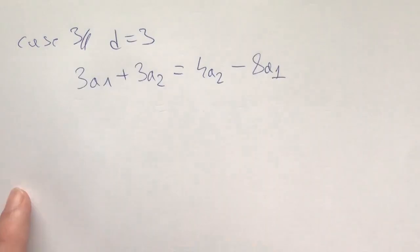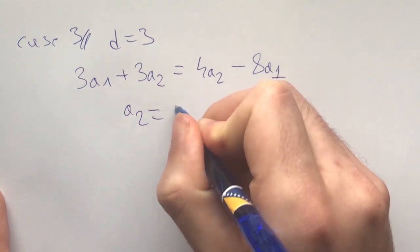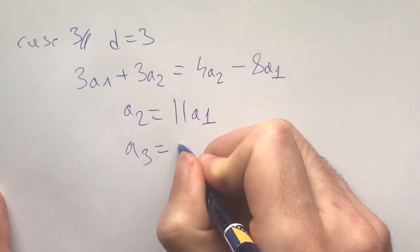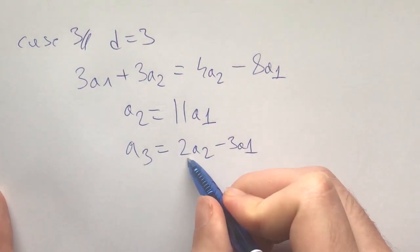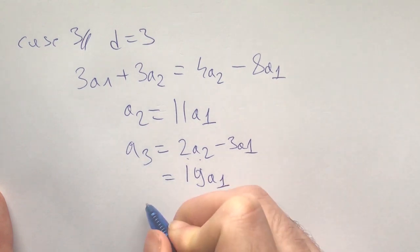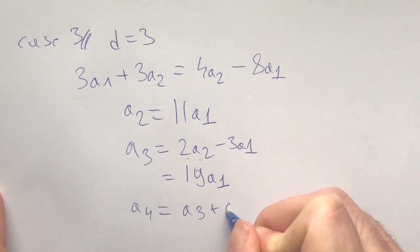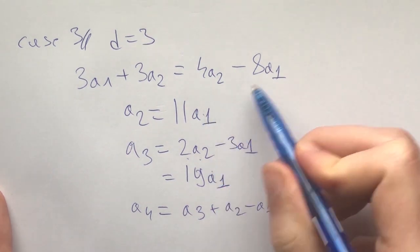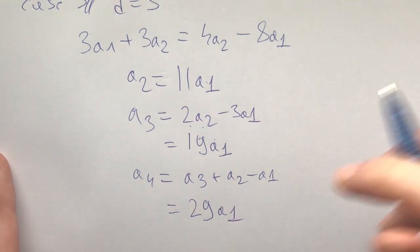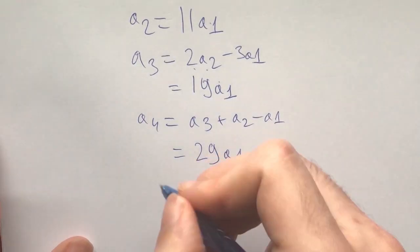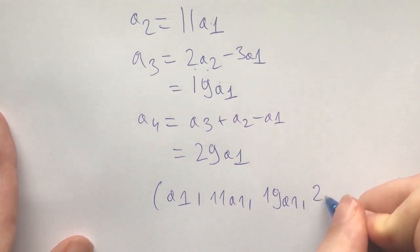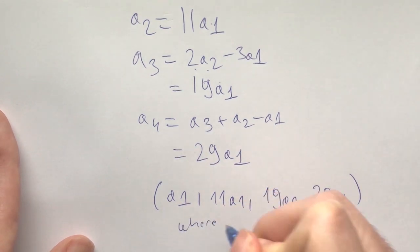Now let's go to the final case. Case 3: d equals 3. Here the condition rewrites as 3a1 + 3a2 = 4a2 - 8a1. A little bit of algebra gives us a2 = 11a1. Now what is a3? a3 = 2a2 - 3a1, which here is 22a1 - 3a1 = 19a1. And then a4 = a3 + a2 - a1 = 19 + 11 - 1 = 29a1. This gives us another family of solutions, namely a1, 11a1, 19a1, and 29a1, where a1 is a positive integer.